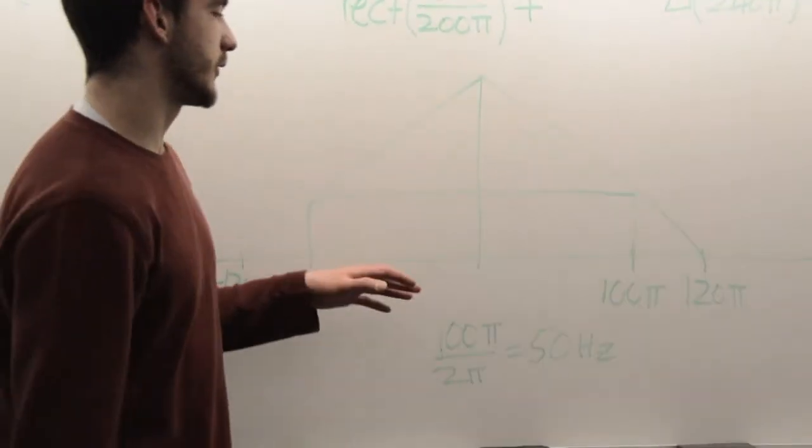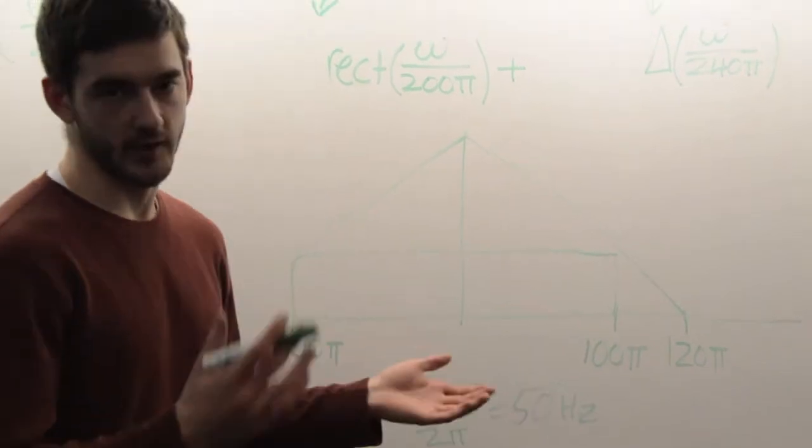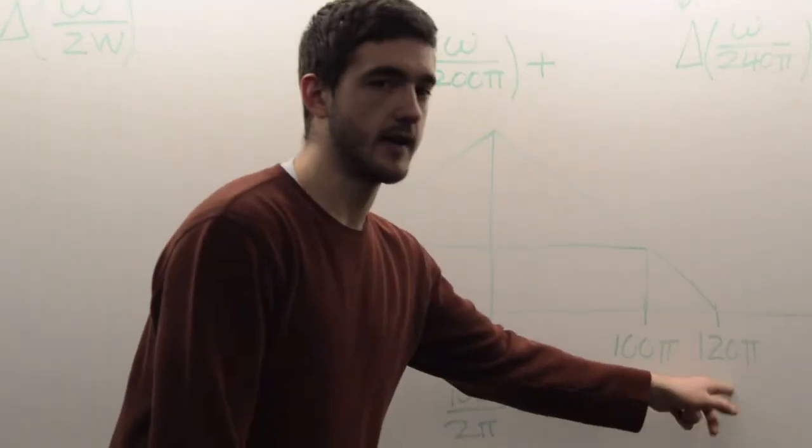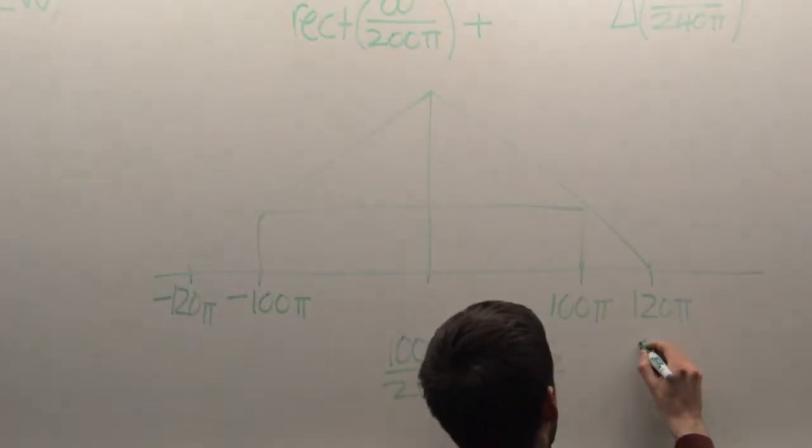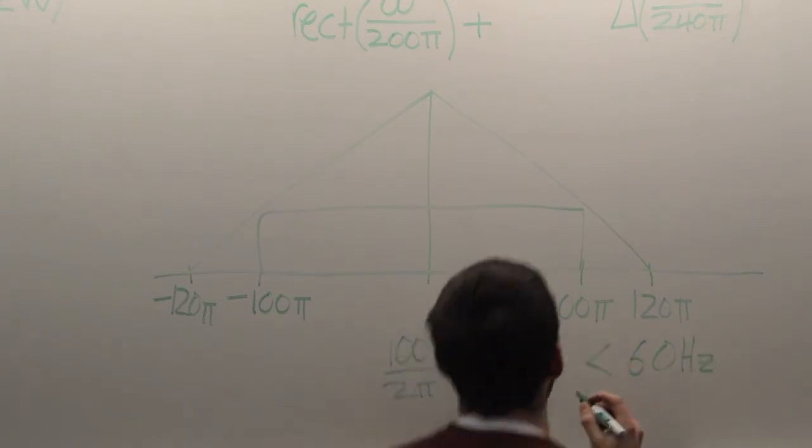Now we want to find the bandwidth of this triangle function right here. In the same exact way, we take this value, which is 120 pi, and we divide by 2 pi, which is 60 hertz. And 60 hertz is greater than 50 hertz.